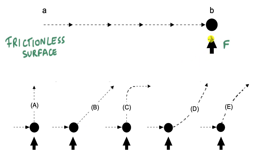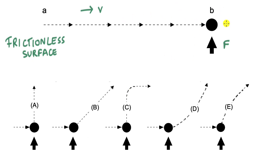The ball is moving to the right with a constant velocity V. There is a sudden force which acts on the ball when it reaches point B. The question is to determine the path of the ball after the impact of this sudden force. Pause the video and give this one a try.